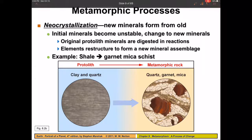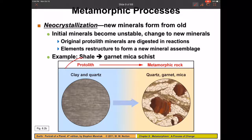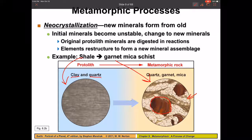We can also get neocrystallization, where we take old minerals — like we see here with shale, which has clay and quartz — put it under pressure, and new minerals form, such as garnets and mica grains. We're basically recombining those minerals into a new assemblage.